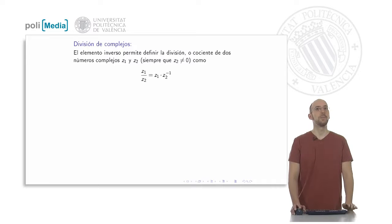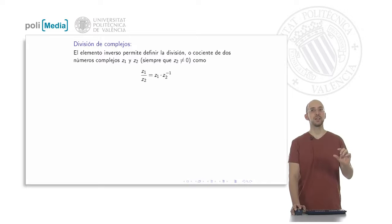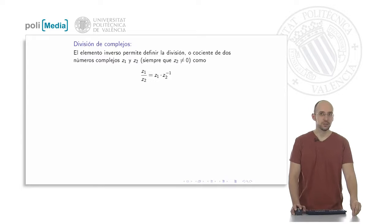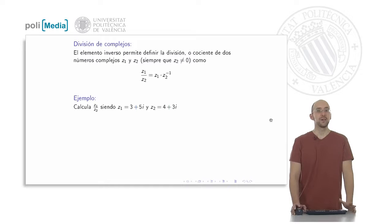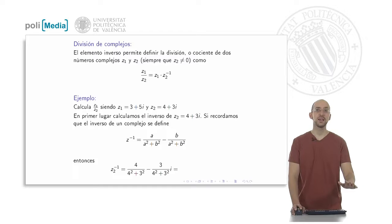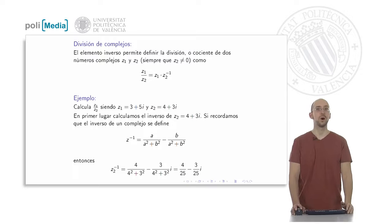Why do we define the inverse of a complex number? In order to define division. Division is defined as follows: z1 divided by z2 equals z1 times the inverse of z2. In other words, to divide complex numbers, we calculate the inverse of the denominator and multiply it by the numerator. As an example, let z1 be three plus five i and z2 be four plus three i.